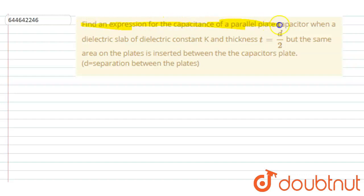Find an expression for capacitance of a parallel plate capacitor when a dielectric slab of dielectric constant k and thickness d/2, but same area as of the plate, is inserted between the capacitor plates.